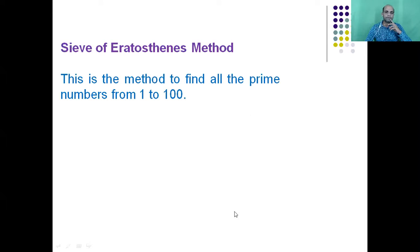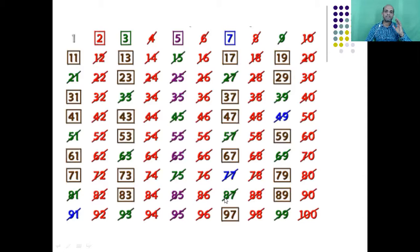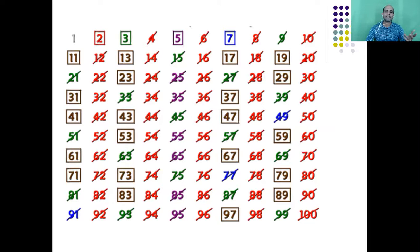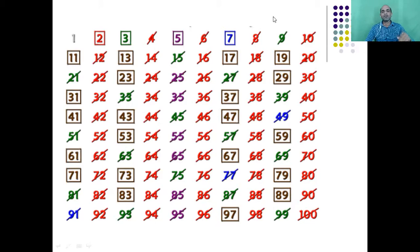To find prime and composite numbers, there is a method discovered by a mathematician named Eratosthenes. In this method, you write numbers from 1 to 100 in ten rows and ten columns. Then, since 1 is a special number — neither prime nor composite — you mark it out. Next, take 2 and cross out all multiples of 2, which are the numbers from the 2 times table: 4, 6, 8, and so on.